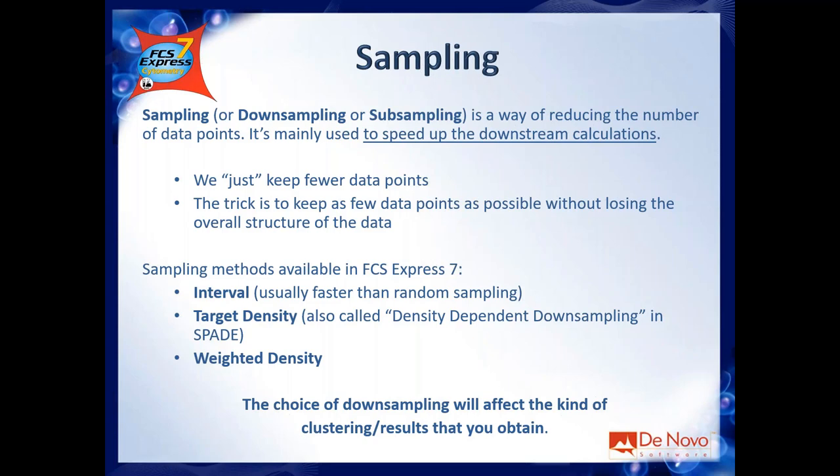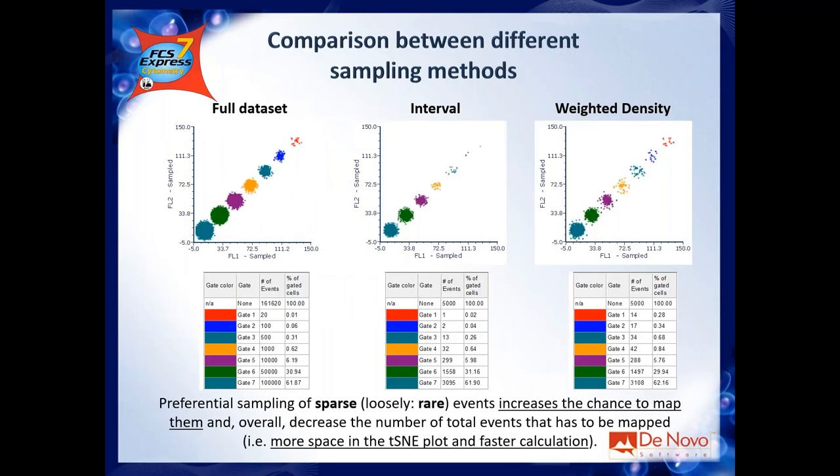The main feature of density-based downsampling is that it preferentially samples rare populations. The risk of random sampling is that if you don't sample enough events, you may lose your rare populations. If you don't sample a rare population sufficiently, you will not be able to map it — practically speaking, you will not see an island for that population in the tSNE map.